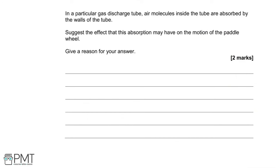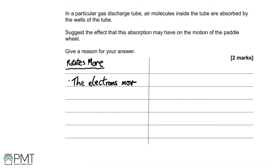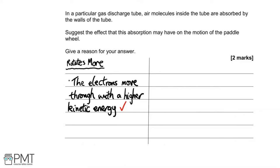In a particular gas discharge tube, air molecules inside the tube are absorbed by the walls. The question asks for the effect this may have on the motion of the paddle wheel. There are two schools of thought: the paddle wheel rotating more, or rotating less. For the wheel rotating more: if air molecules are absorbed by the walls, electrons passing through would have higher kinetic energy, causing the wheel to rotate more — two marks.